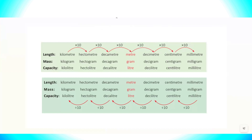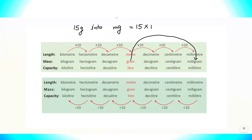Now, if I have to convert 15 grams into milligrams, I go from gram to milligram on the table. There are three tens in between, so I multiply 15 by 10 × 10 × 10, which means I add three zeros. That means 50,000 milligrams. That is how you can convert bigger units into smaller units.